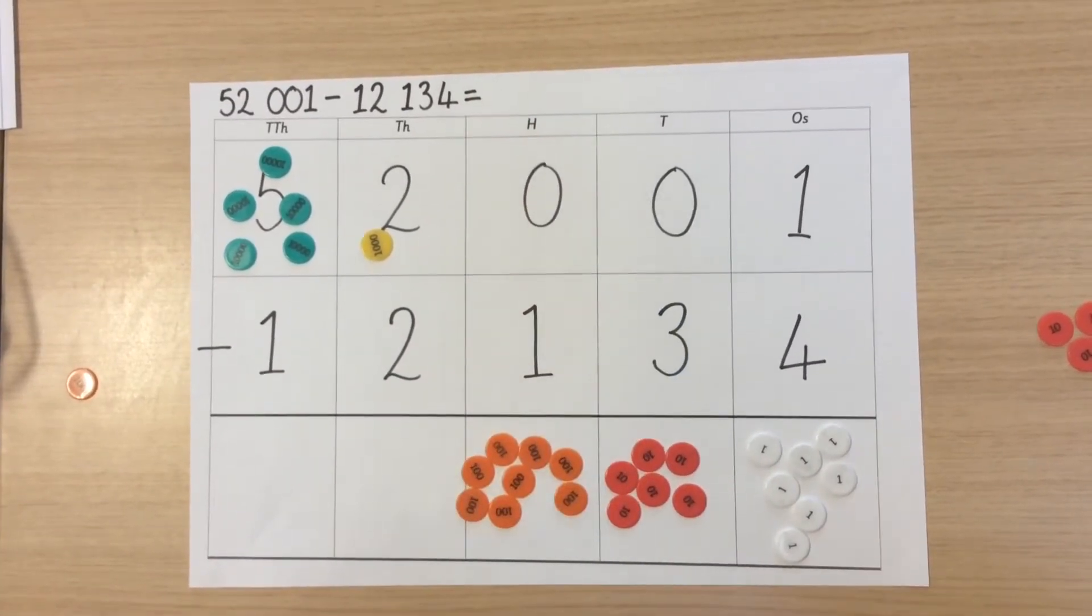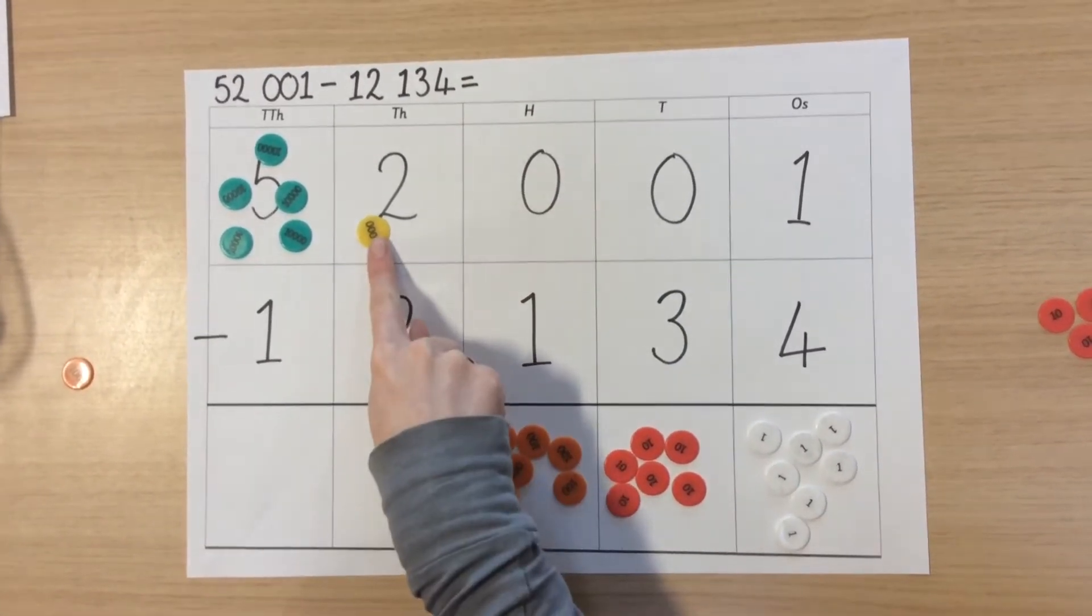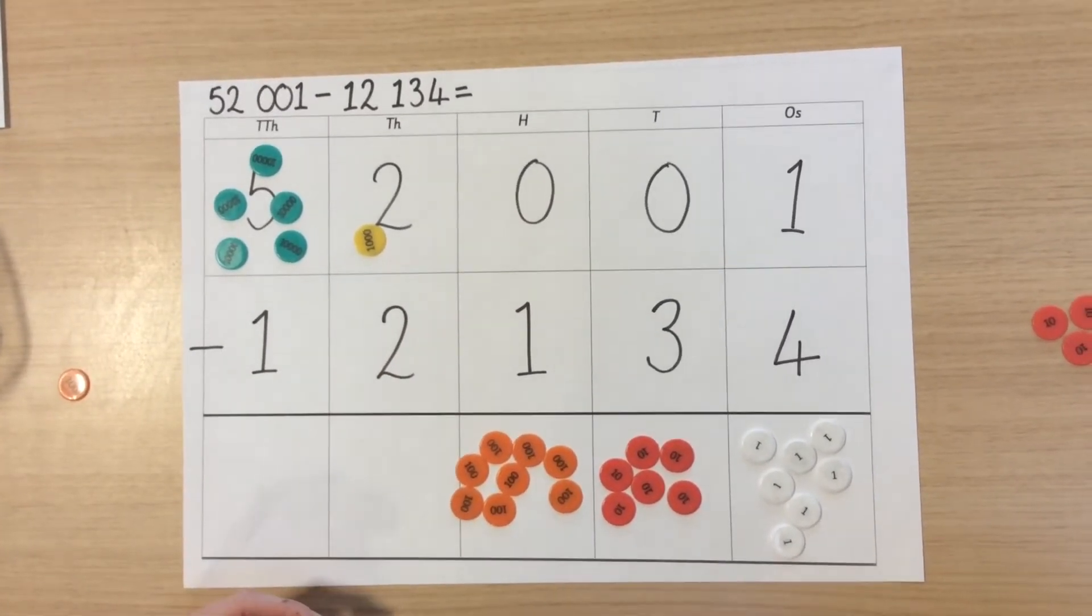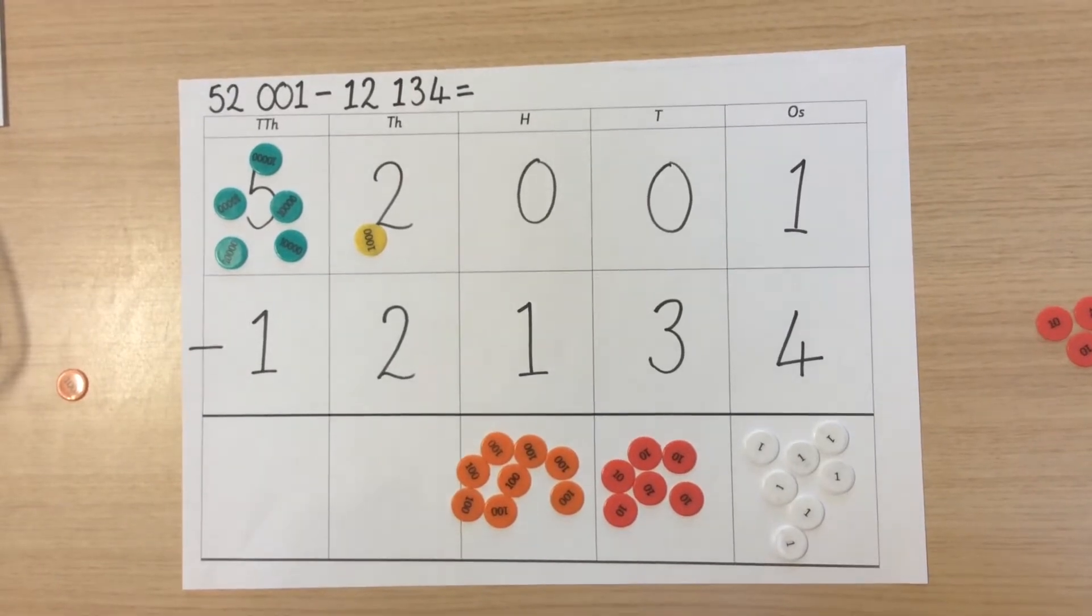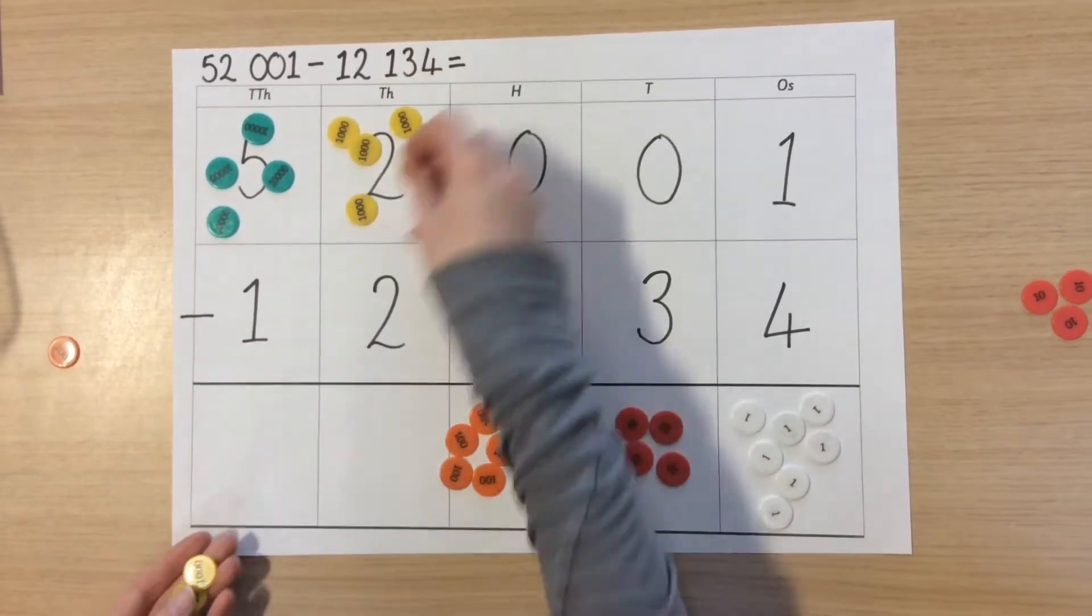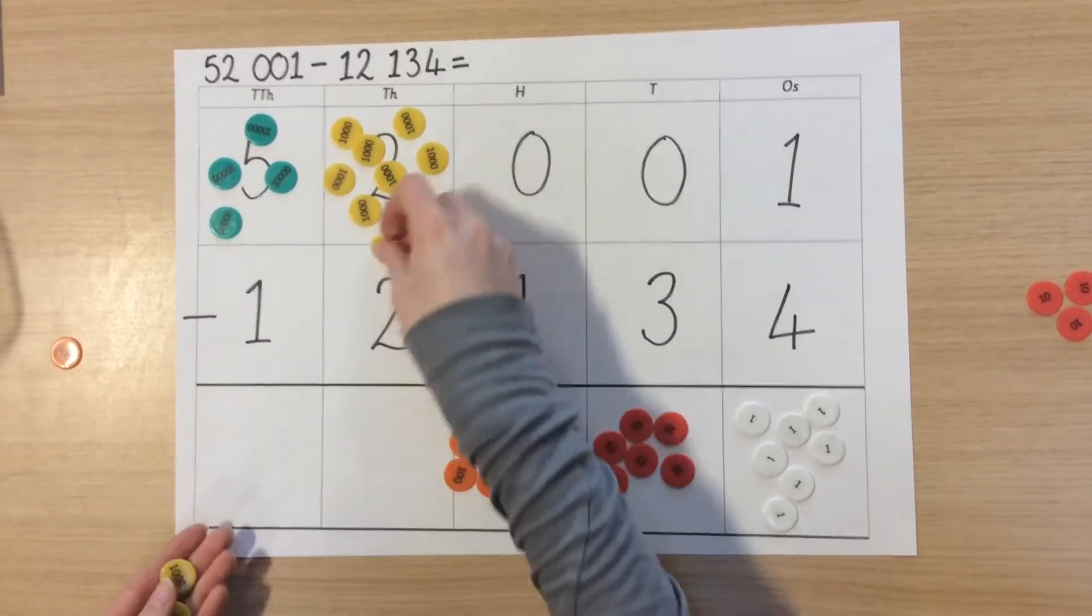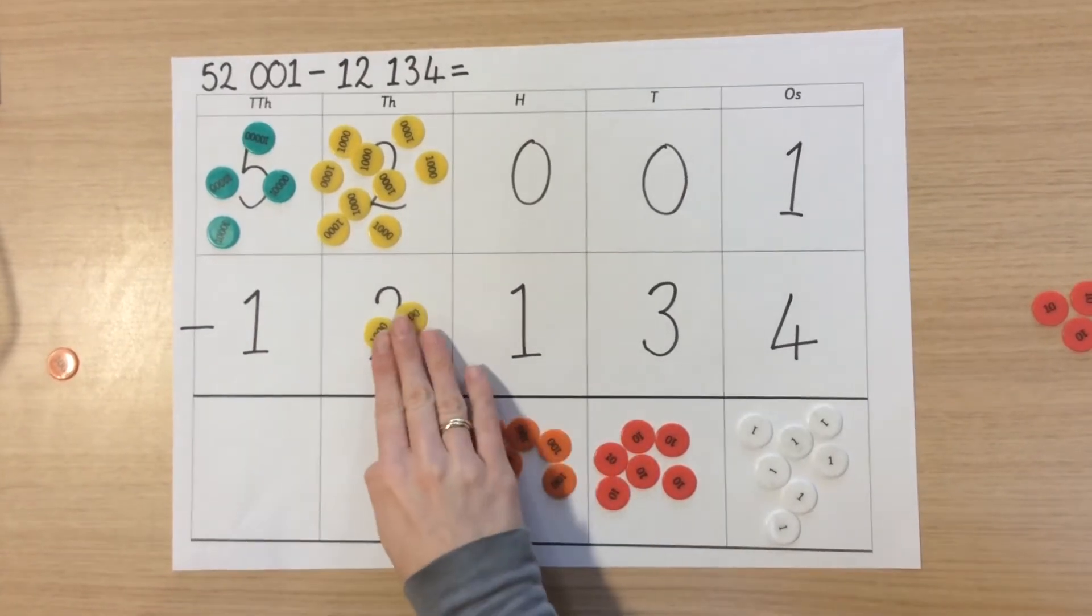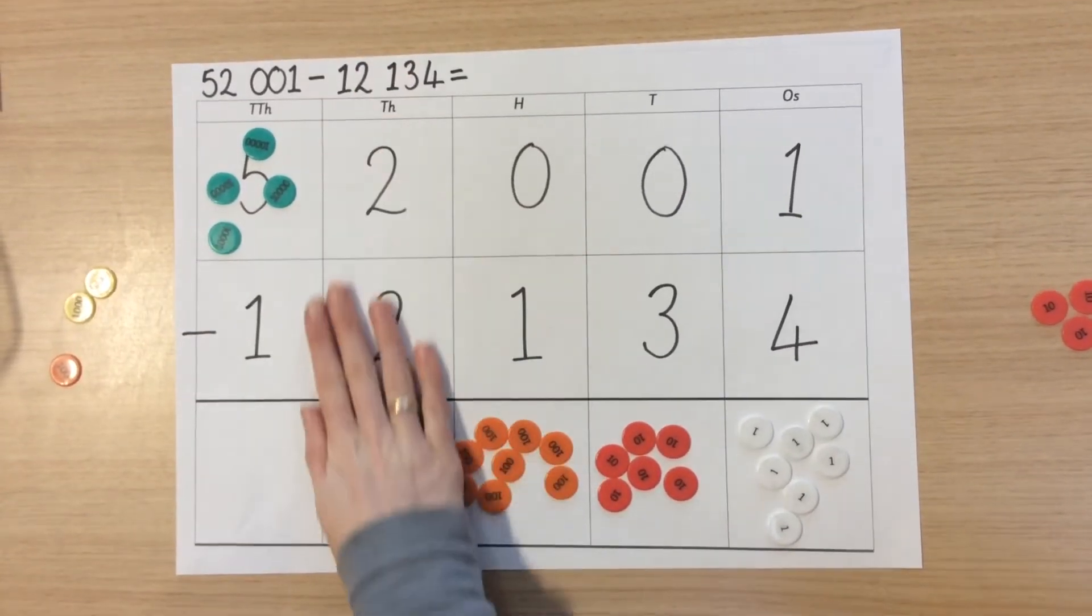We then continue in our thousands column. One thousand is left. We cannot however do this because one thousand take away two thousands. We need to therefore exchange ten thousands for ten thousands. This should leave us with eleven thousand. We bring two of those thousands in, we check them, subtract them and bring what is left down.